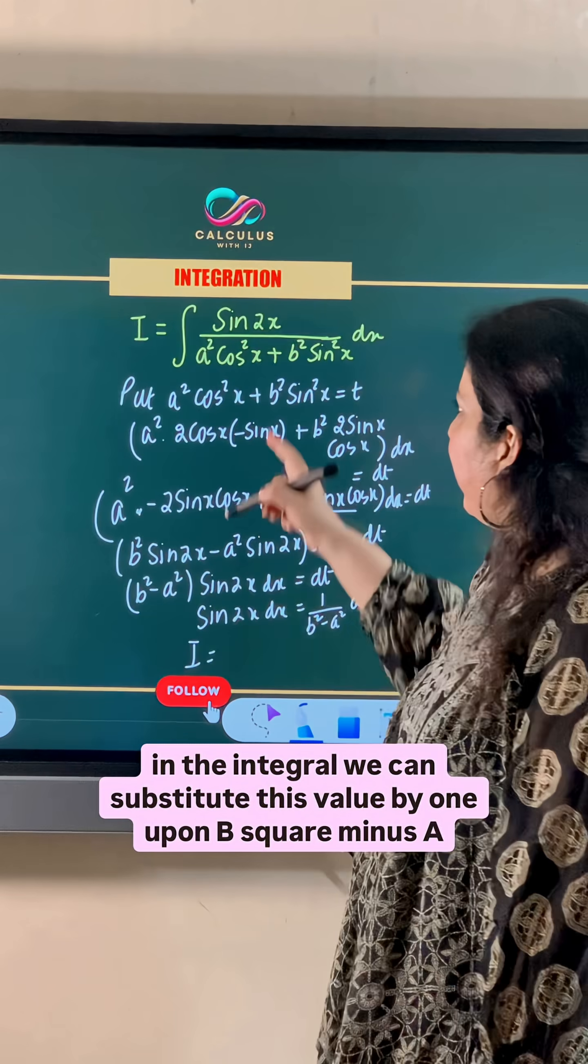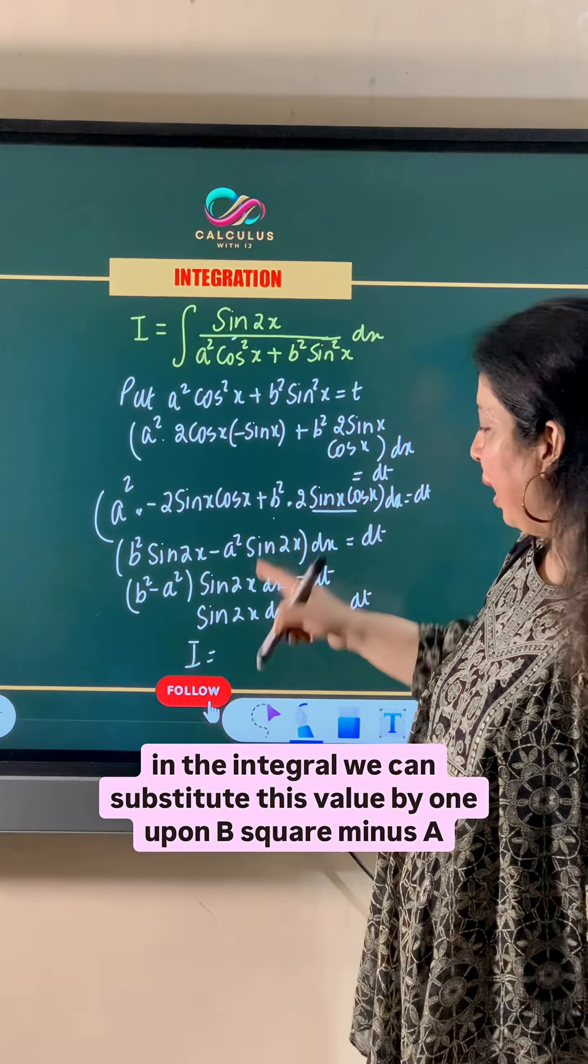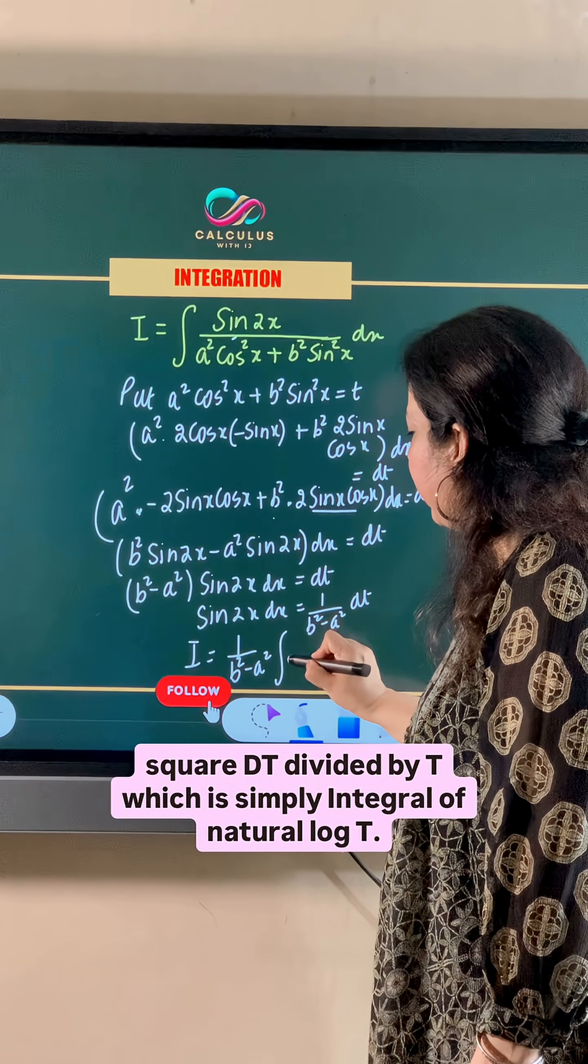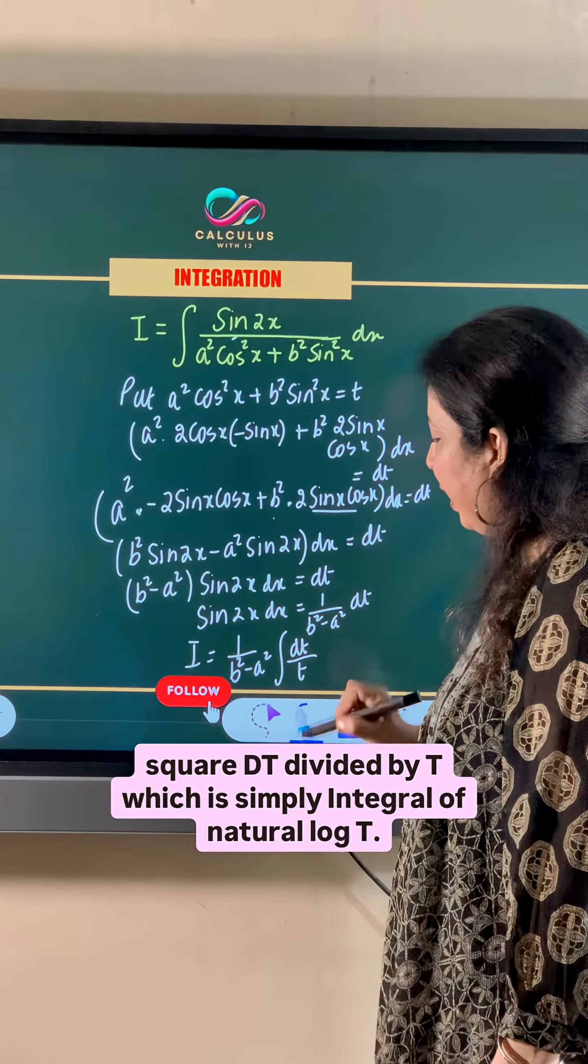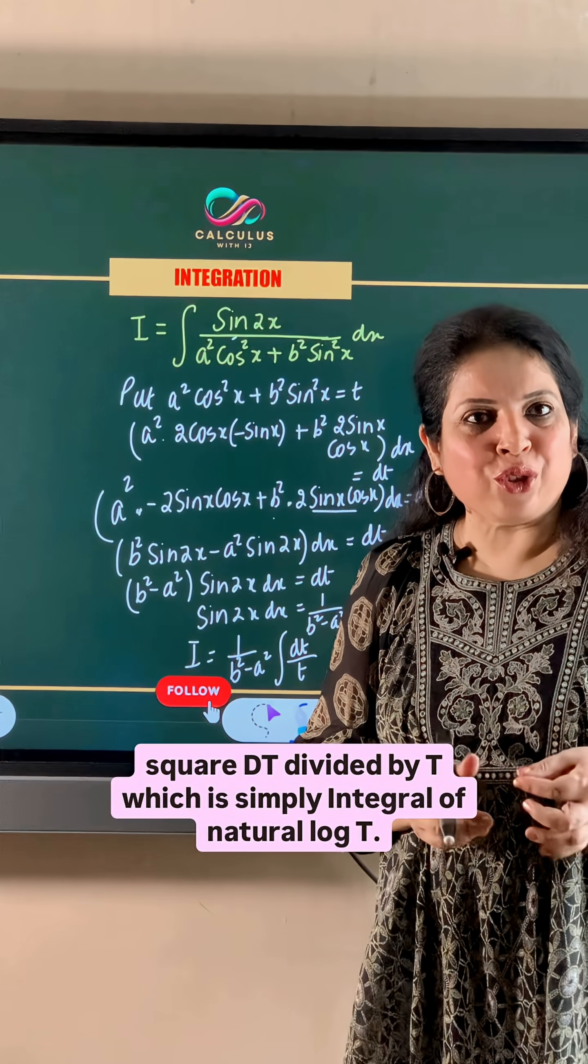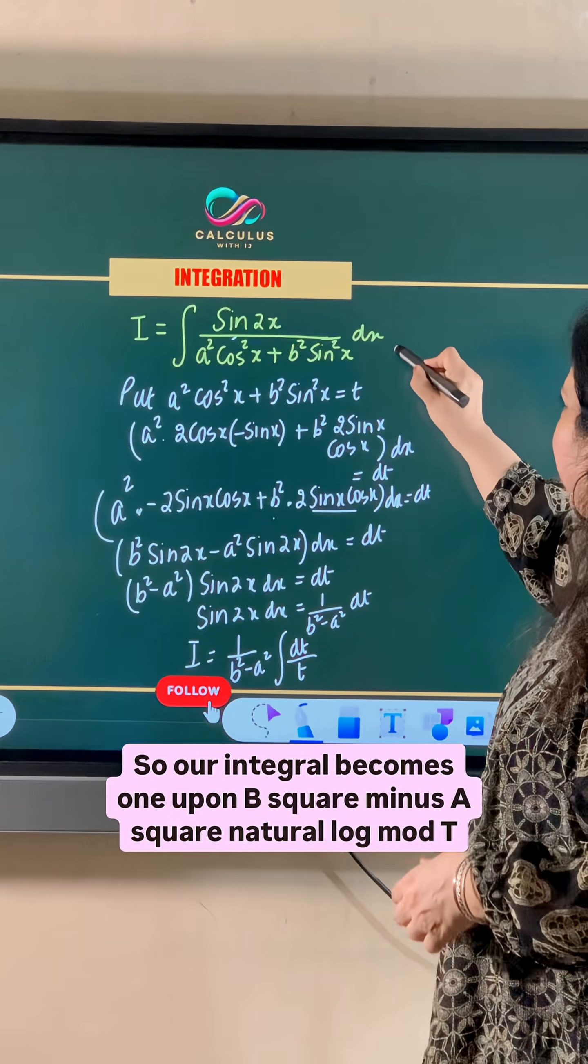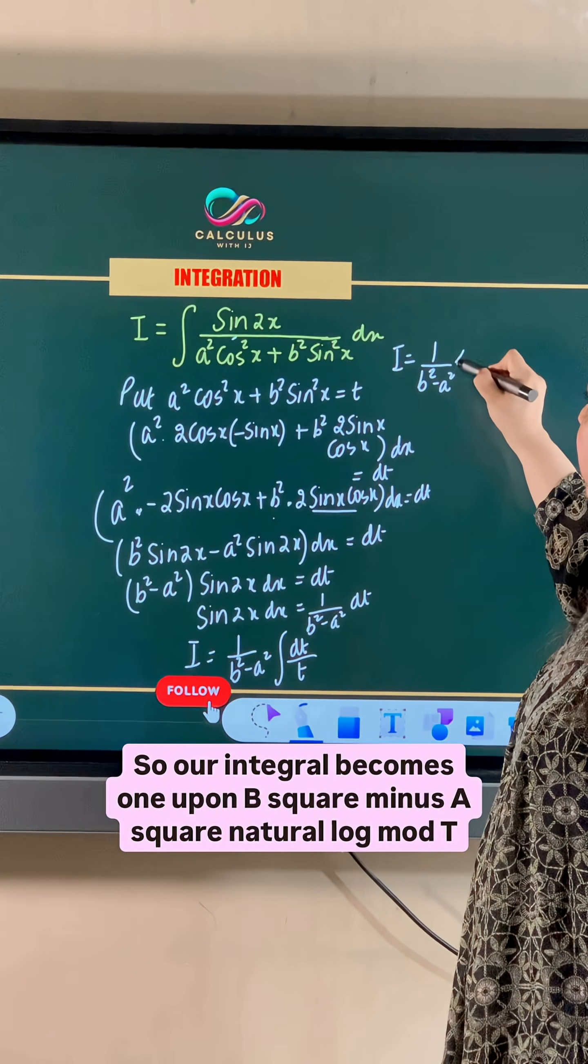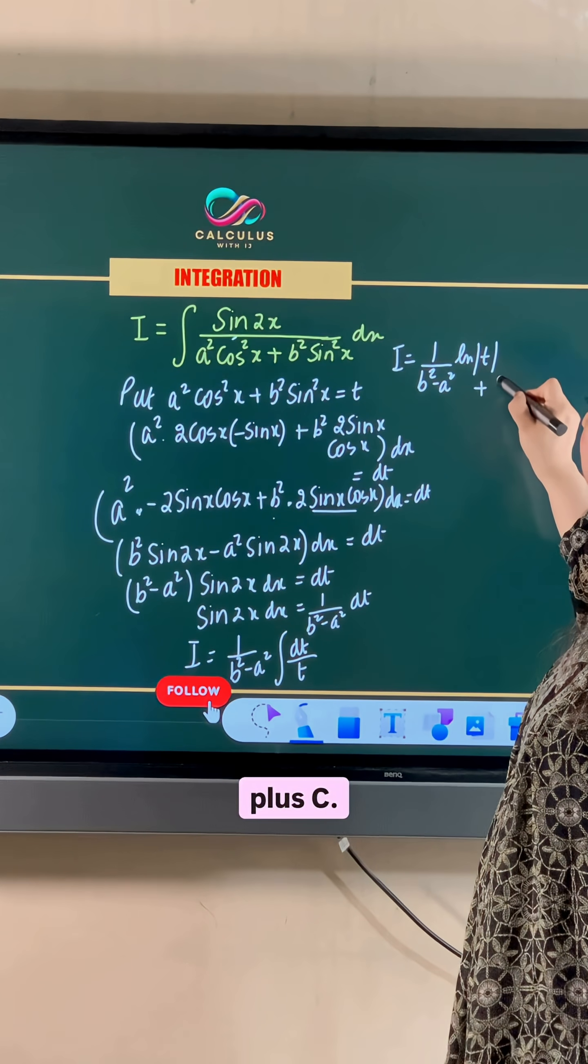So in the integral, we can substitute this value by 1 upon b square minus a square dt divided by t, which is simply integral of natural log t. So our integral becomes 1 upon b square minus a square, natural log t plus c.